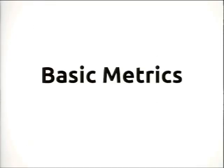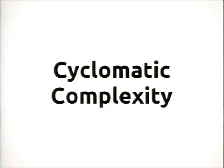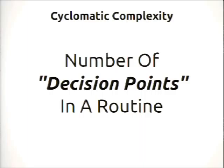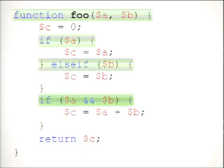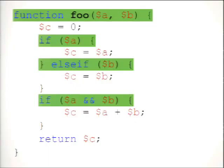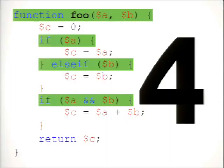The first basic metric I'd like to talk about is cyclomatic complexity, and it's really simple. It's the number of decision points, or branch points, in a routine — either a class method or a function. If we take an example function with an if, an else-if, and another if, we also need to add one for the function itself. So this function has a cyclomatic complexity of four. Simple, straightforward.